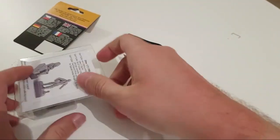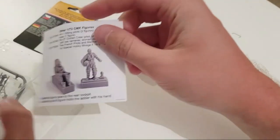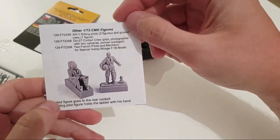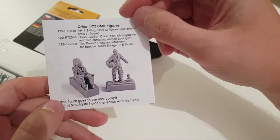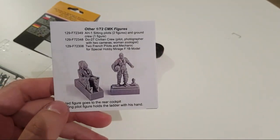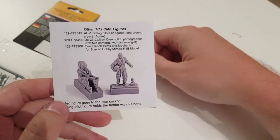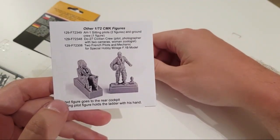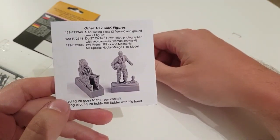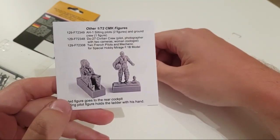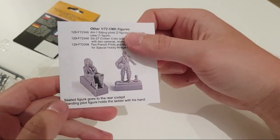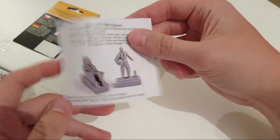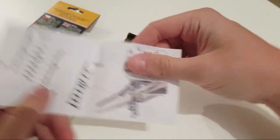Thank you for the first like on this video. Then here we have the assembly manual. First of all we have here pictures of other 1:72 scale CMK figures. As you can see there are AH-1 sitting pilots, also Dornier 27 civilian crew, and two French pilots and mechanic for Mirage aircraft in 1:72 scale obviously.